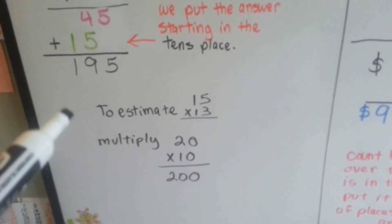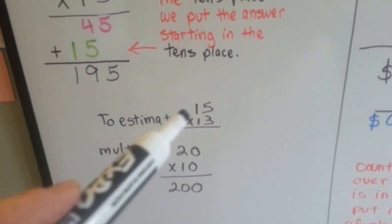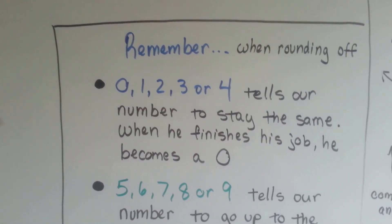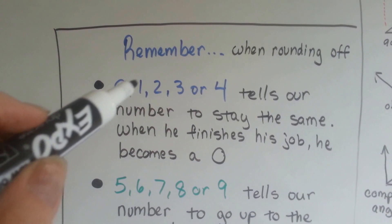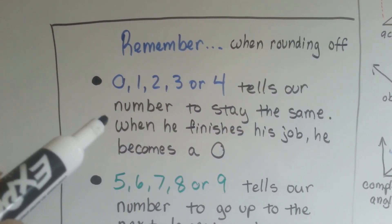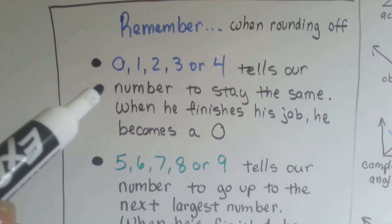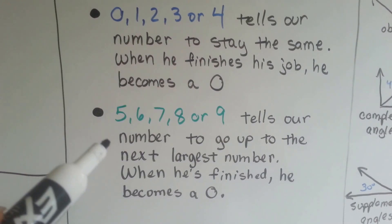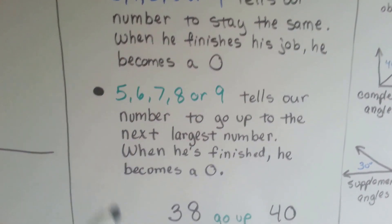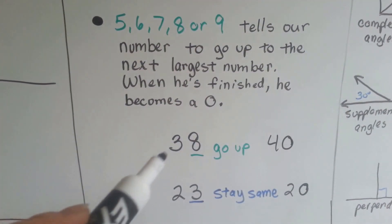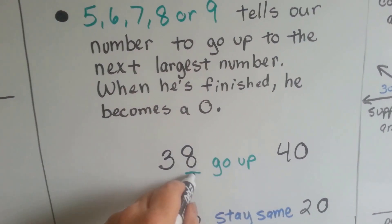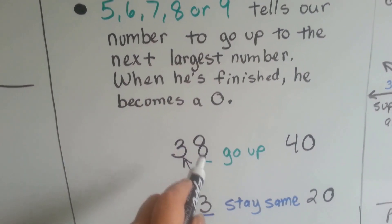Now to estimate this — 15 times 13 — we round them off. Do you remember how to round off? When we round off numbers, if the number to the right is a 0, 1, 2, 3, or 4, it tells our number to stay the same, and when he's finished with his job, he becomes a 0. If the number to the right is a 5, 6, 7, 8, or 9, he tells our number to go up to the next largest number; when he's finished, he becomes a 0. So like for 38, if we're rounding the 3, the 8 tells the 3 to go up because he's an 8.